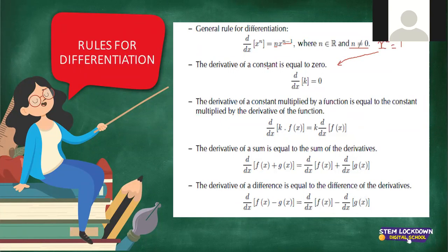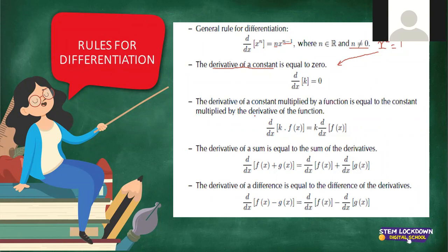The derivative of a constant is zero. And if we have a constant multiplied by a function, you're actually just finding the derivative of the function and multiplying it with that constant. So when you do problems, you'll see it's very easy to remember these rules.